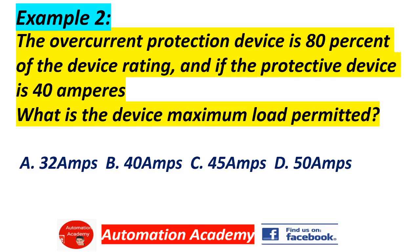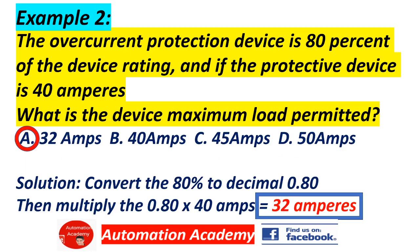Example number 2: The overcurrent protection device is 80% of the device rating, and if the protective device is 40 amperes, what is the device maximum load permitted? Answer: A, 32 amps. Solution: convert 80% to decimal, 0.80, then multiply 0.80 by 40 amps. The answer is 32 amps.